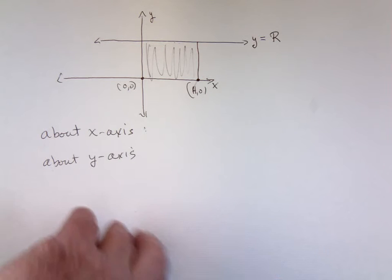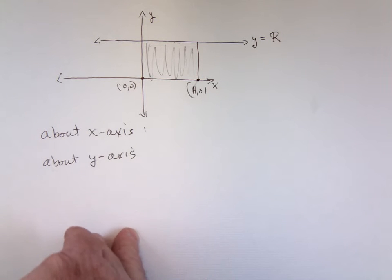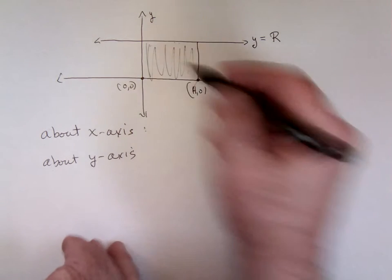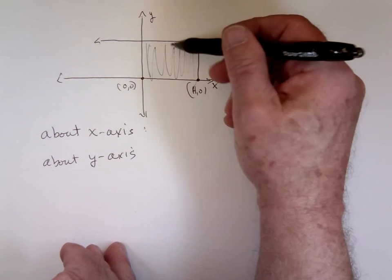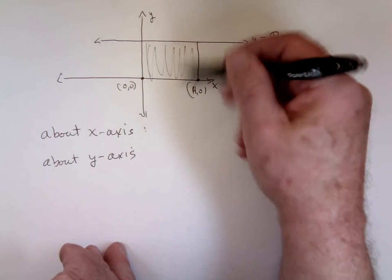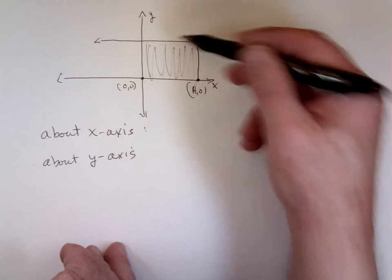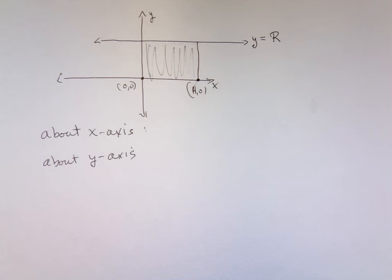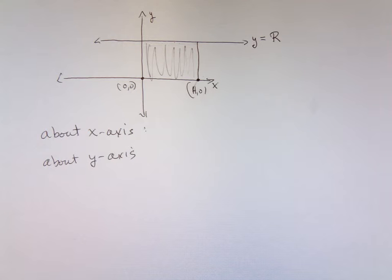Let's take a look. First of all, about the x-axis. We're going to take this arc length, y equals R, and whip it around the x-axis. Now what are we going to generate when we take this around the x-axis? A cylinder. What we're doing is finding the lateral surface area of a right circular cylinder this time.